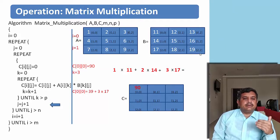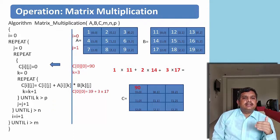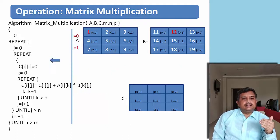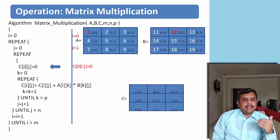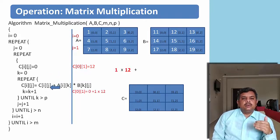After J is incremented, it is matched with the column bound. If not satisfying, it will repeat the second inner loop. J value becomes 1, c[i][j] again becomes 0, K value again becomes 0, and we go on to calculate the next element. In this way we are going to do the multiplication. If you understood this process, the matrix multiplication becomes easy.